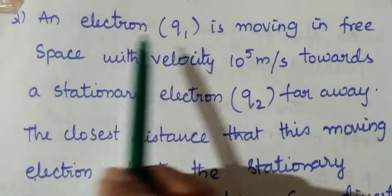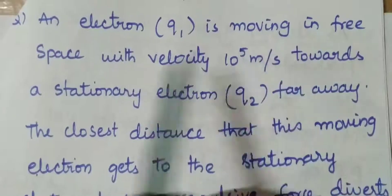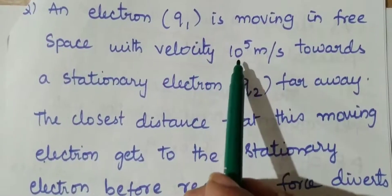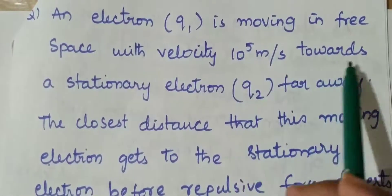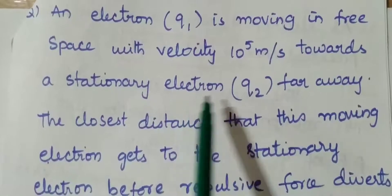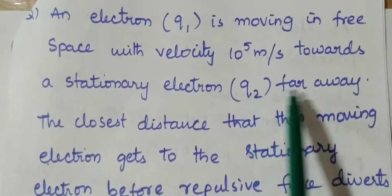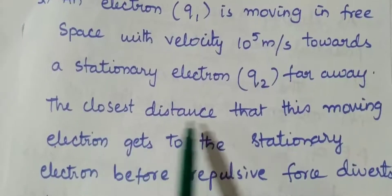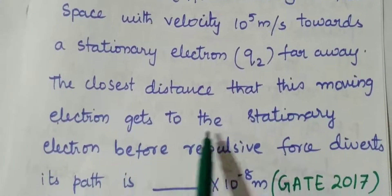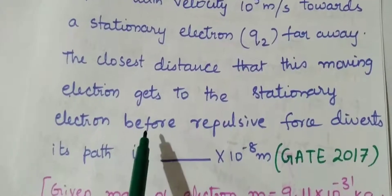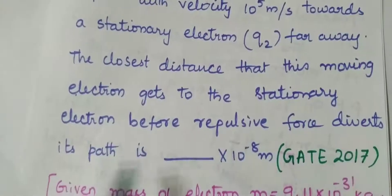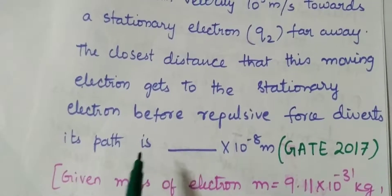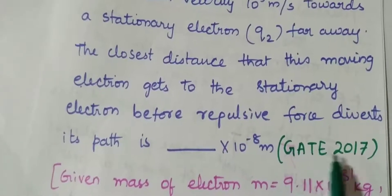An electron Q1 is moving in free space with velocity 10 power 5 meter per second towards a stationary electron having charge Q2 far away. The closest distance that this moving electron gets to the stationary electron before repulsive force diverts its path is. This is from GATE 2017.